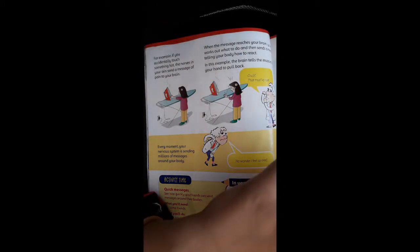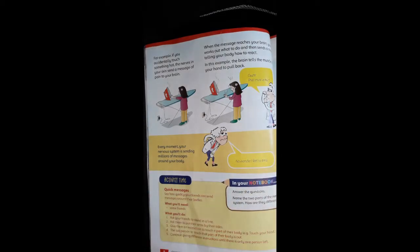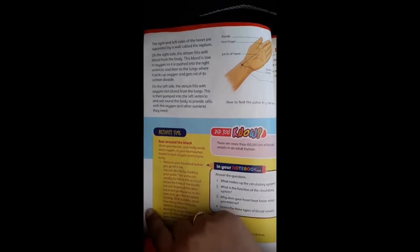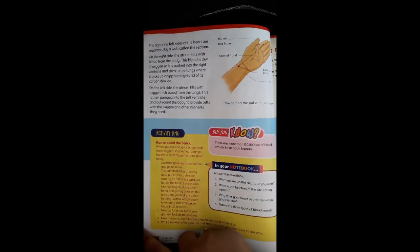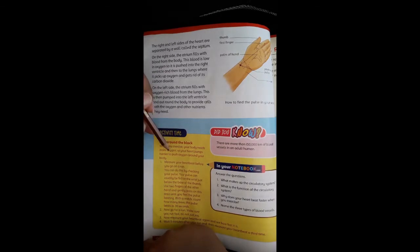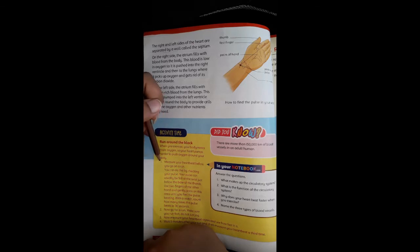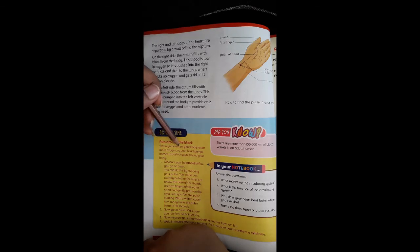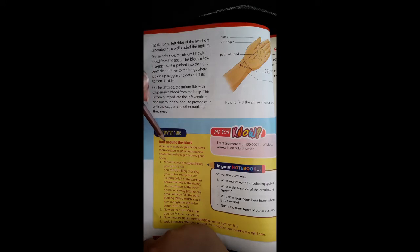The three types of blood vessels are arteries, veins, and capillaries. Students, you have to complete the exercise. Here is an activity: when you exercise, your body needs more oxygen, so your heart pumps harder to push oxygen around your body.